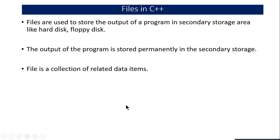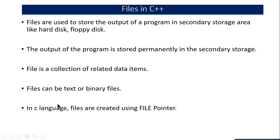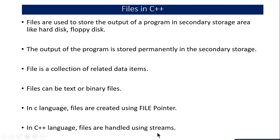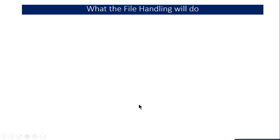Generally a file is a collection of related data items — a file belongs to a particular record like student, bank, or employee information. The file can be a text file or a binary file; that will not create any difference. In C language we used file pointers, but in C++ language we will use streams.